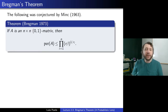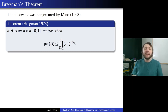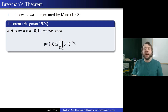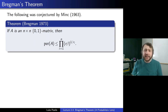This is Bregman's Theorem. It was conjectured by Minc in 1963 and proved by Bregman in 1973. It states that if A is an n×n 0-1 matrix, then per(A) ≤ ∏_{i=1}^{n} (R_i!)^{1/R_i}, where the R_i's are the row sums. When R_i = n for every i, you recover n! as before. The main focus of today is using probabilistic methods to prove Bregman's theorem.